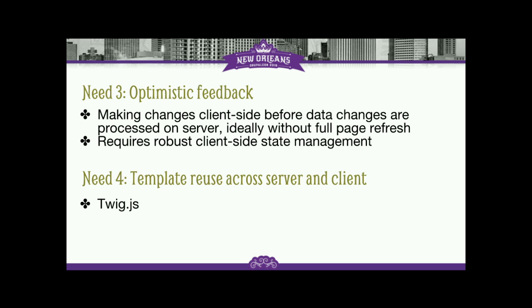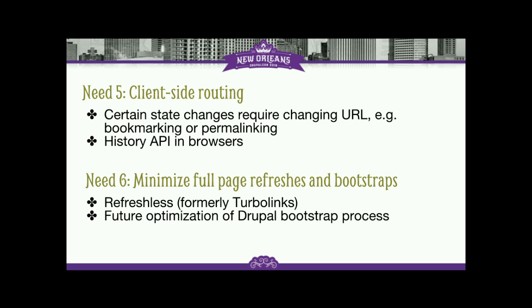When we talk about state changes on the client side, one of the big issues is that we want to ensure continued bookmarkability using the history API, meaning that if you have a dynamic state change which occurs on the client side, you should be able to bookmark that state. Drupal is a system that is very much predicated on routes, and we want to make sure that whatever route you hit is able to basically show what you need to show. Part of that is what happens when you go from one URL to the other.